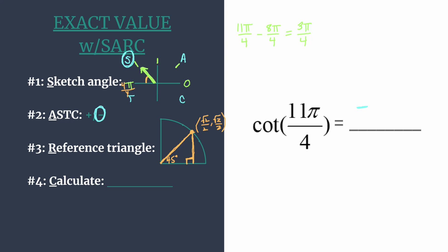Now that we have our coordinates, we can calculate the value for the cotangent. The cotangent of an angle on the unit circle is the x-coordinate divided by the y-coordinate. With a reference angle of 45 degrees, both coordinates are square root of 2 over 2, so dividing a value by itself gives us 1. Since we determined in step 2 that our final answer is negative, the cotangent of 11 pi over 4 is negative 1.